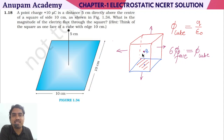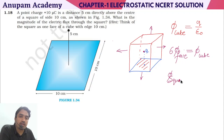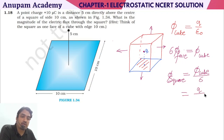Now, the charge has been displaced from the center of the square, but we have constructed the cube such that the square is one face and the charge sits at the center of the cube. So flux passing through the square is equal to the total flux passing through the cube divided by six.